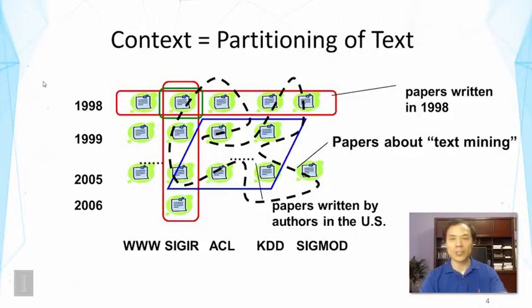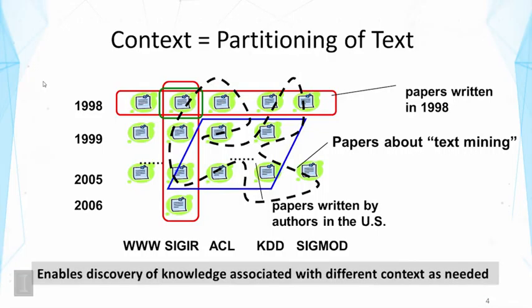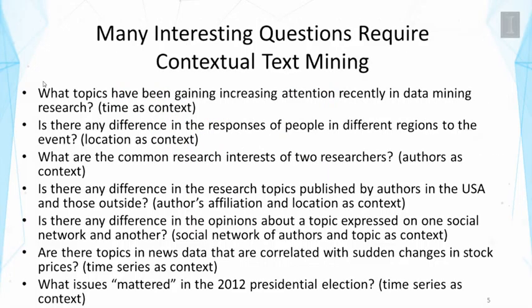We can also partition the data to obtain papers written by authors in the US, which uses additional context of the authors, and this would allow us to compare that subset with another set of papers written by authors in other countries. Or we can obtain a set of papers about text mining and compare it with papers about another topic. These partitionings can also be intersected with each other to generate even more complicated partitions, enabling discovery of knowledge associated with different contexts. Comparing different contexts often gives us a lot of useful knowledge — for example, comparing topics over time lets us see trends, and comparing topics in different contexts can reveal differences about the two contexts.